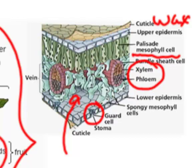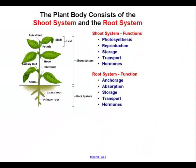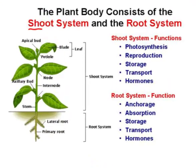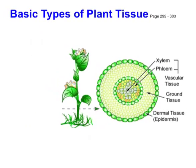Gas exchange happens through specialized cells called guard cells. As we've said, you can break a plant down into two major systems: the shoot system above ground and the root system below ground. The shoot system takes care of photosynthesis using sunlight to manufacture energy, reproduction such as making fruit and flowers, storage, transport of nutrients, and hormones. Down in the root system the functions are anchorage, absorption of water and nutrients from the soil, storage, transportation, and some hormone production.